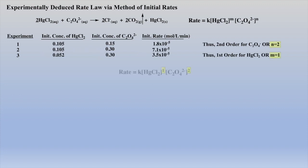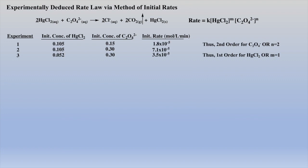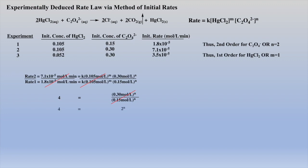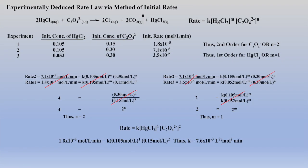The rate law can now be written and the rate constant deduced using the data from experiment one. Now, let's prove this result mathematically. Examining the data from experiment two and experiment one, the ratios of these two experiments simplify so that N is equal to 2, which is to say oxalate is second order. Examining the ratio from experiment two and three, the ratios simplify so that M is equal to 1, which is to say the reaction is first order with respect to mercury chloride. The rate law can now be written and the rate constant deduced using the data from experiment one, which matches the result when the problem was solved by simple inspection.